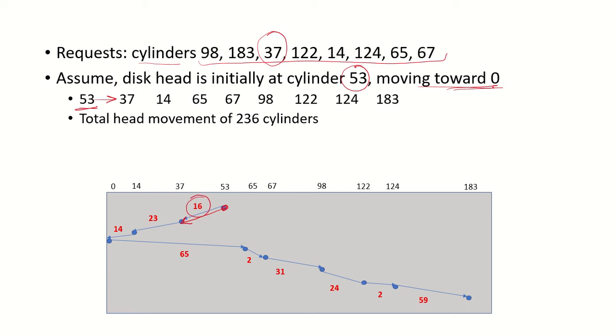Then from 37, again it is moving towards 0, so the next cylinder it will come across is going to be 14. From 37 to 14 which is a distance of 23 cylinders, then 14 to 0. There is no request at 0, but now this is the place where it is going to reverse its direction.